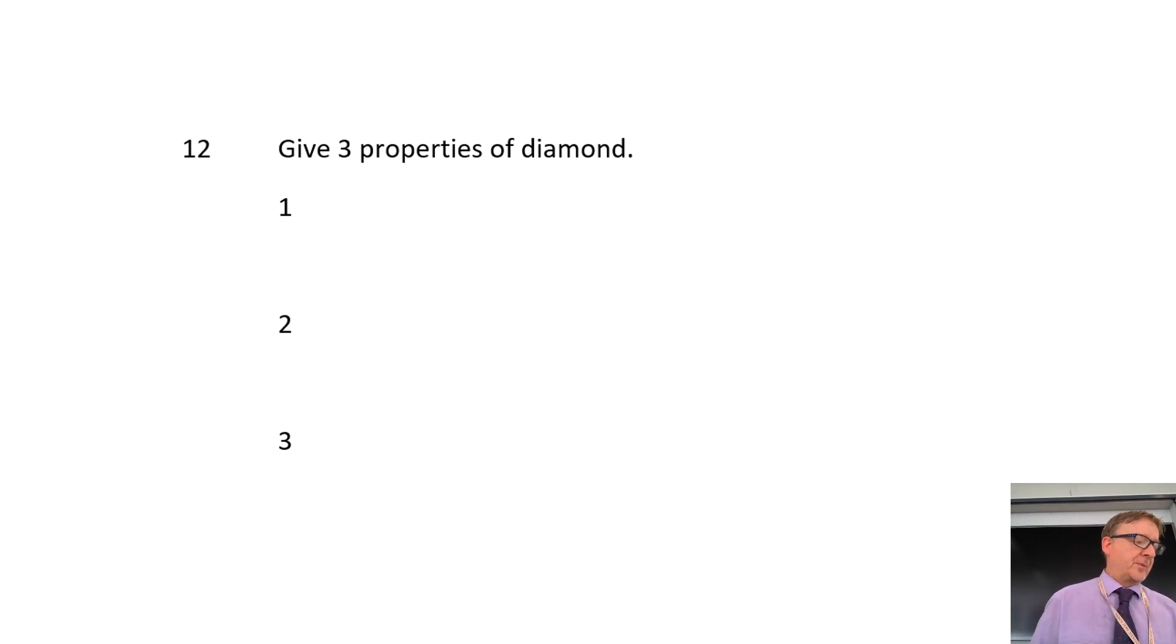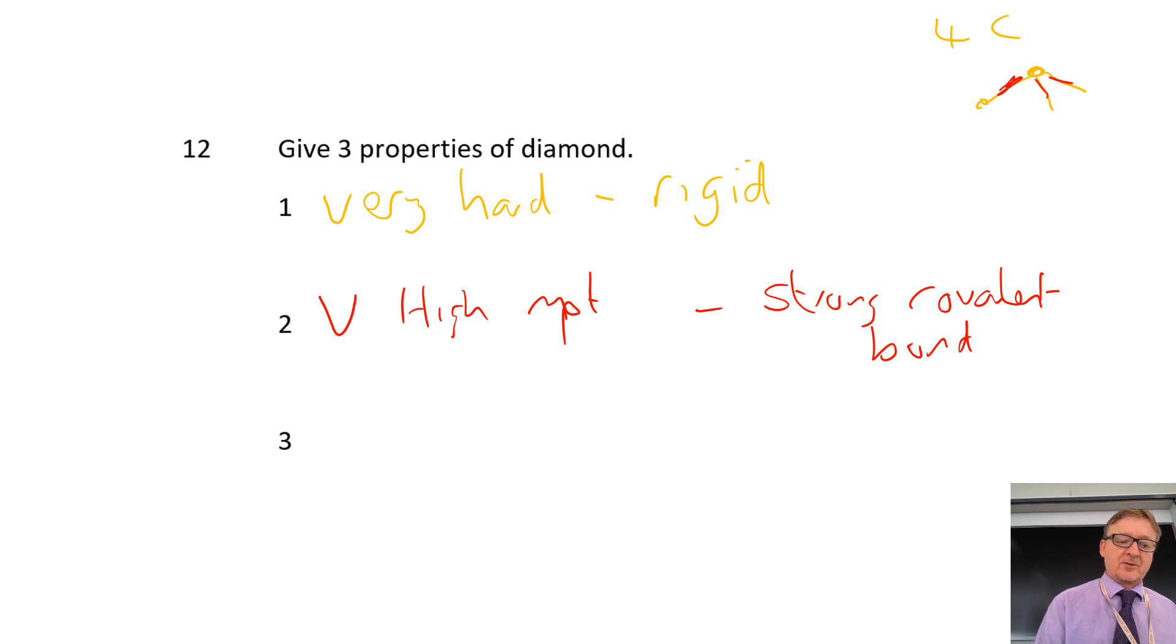Question number 12. Give three properties of diamond. So what we've got is we've then got diamond. Now, diamond creates a fantastic structure. I'm never going to be able to draw it, but every single carbon in diamond makes four carbon bonds, which means it's incredibly strong. So, diamond is very hard, which gives it its rigid structure. It has a very high melting point, and that is because of the strong covalent bonds. They're very strong. These bonds here are incredibly strong. It does not conduct electricity, and that's because it has no delocalized electrons.